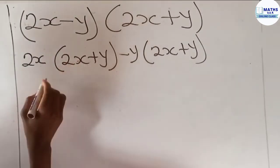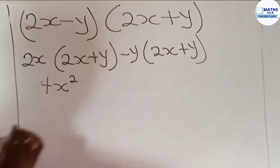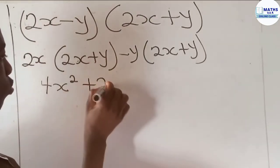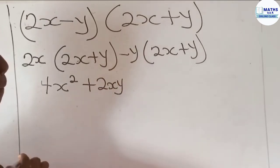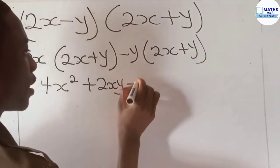Right, now 2x multiplying y gives 2xy. So negative y multiplying 2x gives negative 2xy, then negative y multiplying y gives minus y².